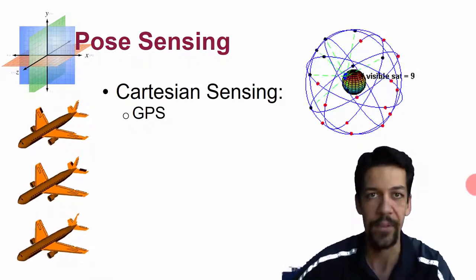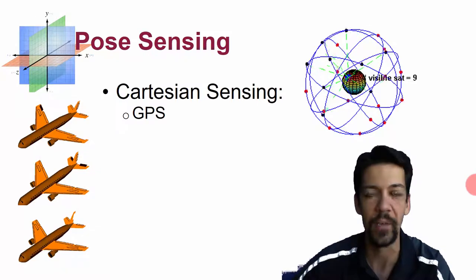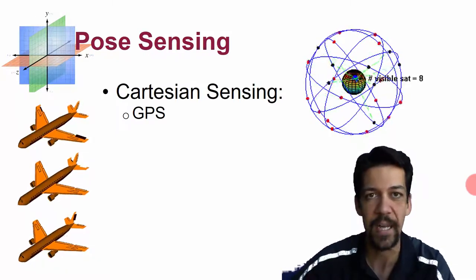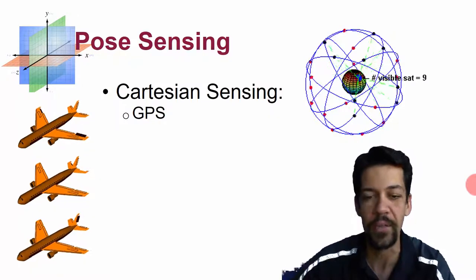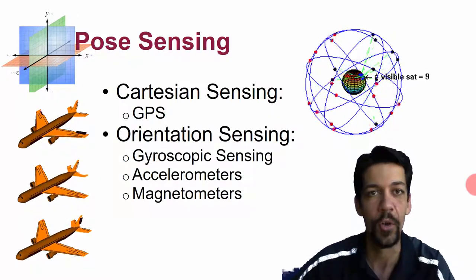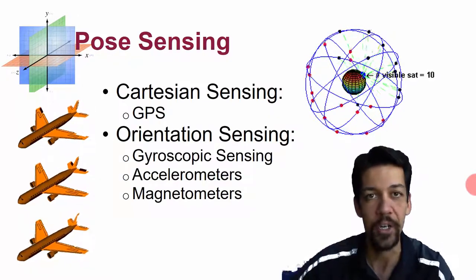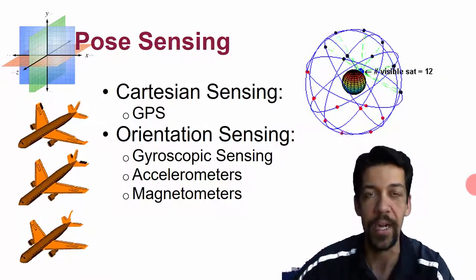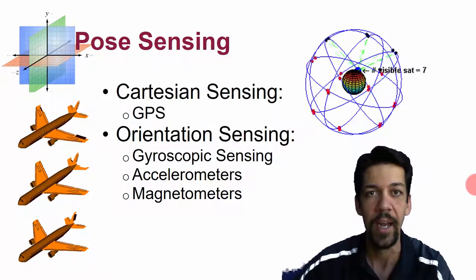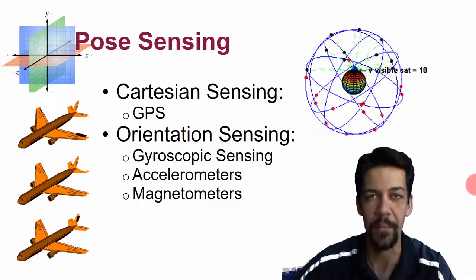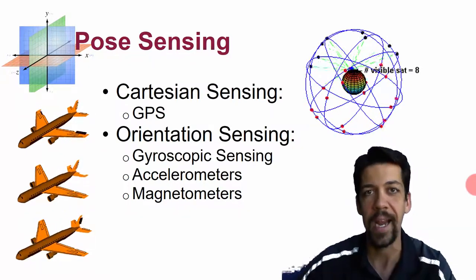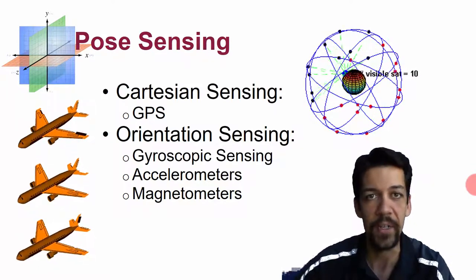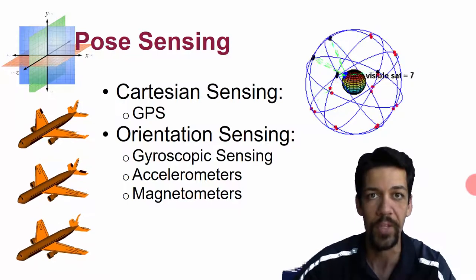But if we're dealing with things indoors, which we do a lot with robotics, that's not sufficient. We have to rely on other things. We can do orientation sensing or inertial frame sensing by sensing the acceleration of an object, the gyroscope properties, the rotation of an object, and we can get direction relative to Earth's magnetic field using a magnetometer.